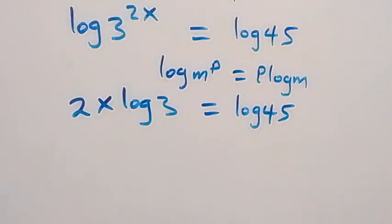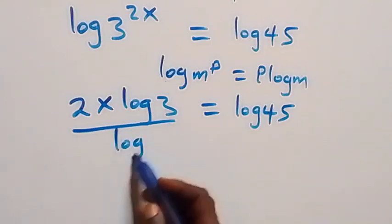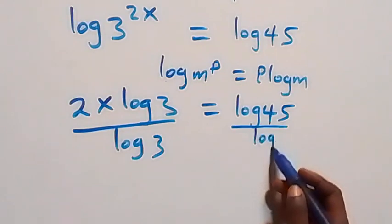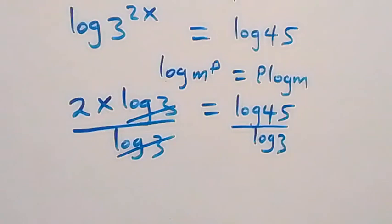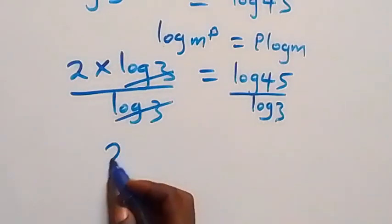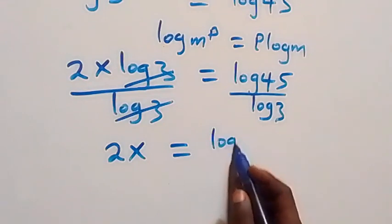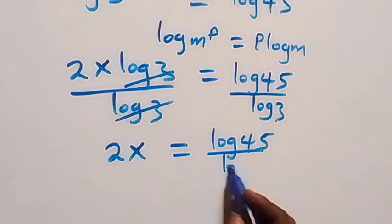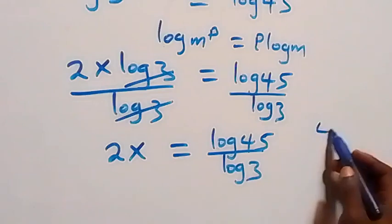Then we divide both sides by log 3. We divide this side by log 3 and also this side by log 3. Log 3 cancels on the left, and we have 2x equals log 45 over log 3. From here we can express 45 as 9 times 5.